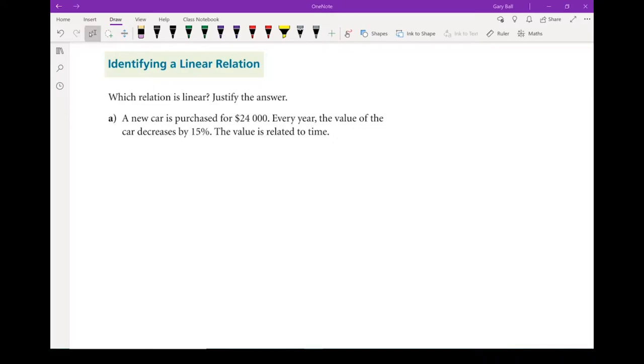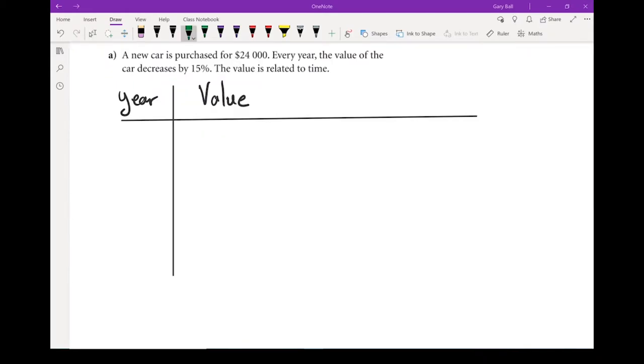The question is, a new car is purchased for $24,000. Every year the value of the car decreases by 15% and that value of the car is related to time. Let's make a table of values to help us sort out whether this is a linear relation or not. So here I've got my table of values. I've got the year that we've owned the vehicle and the value of that vehicle. So when we start off, we're going to start off at year zero because that's our starting point. The value of the vehicle is $24,000.